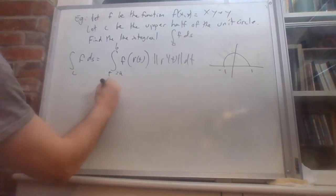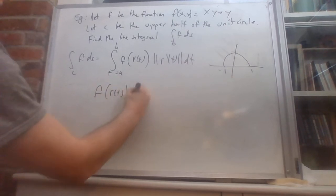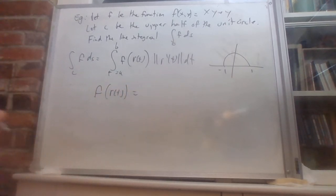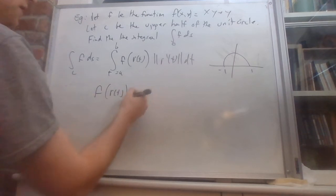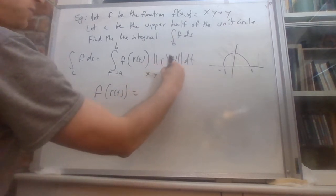Next, let's write out f of r of t, which looks like f of xy except with r plugged in. So instead of xy plus y, it will be cosine of t, sine of t, plus sine of t.